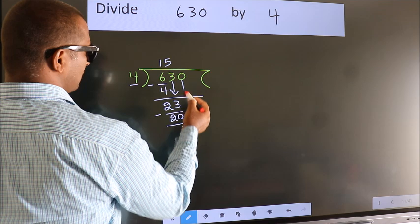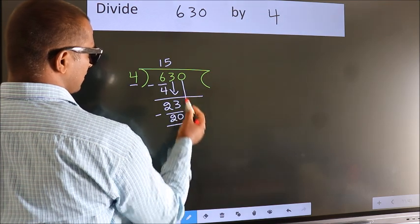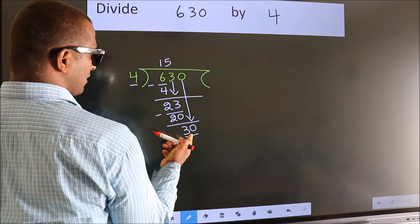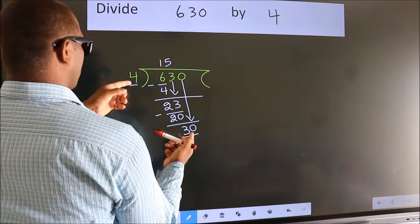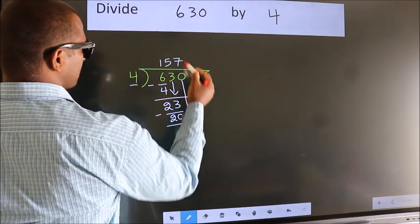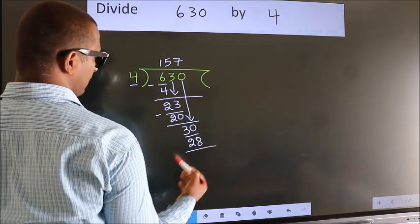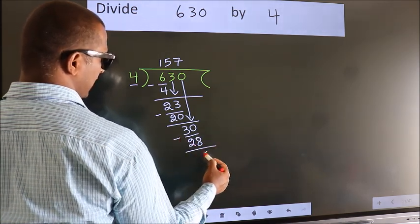After this, bring down the beside number. So, 0 down. So, 30. A number close to 30 in 4 table is 4 sevens, 28. Now, we subtract. We get 2.